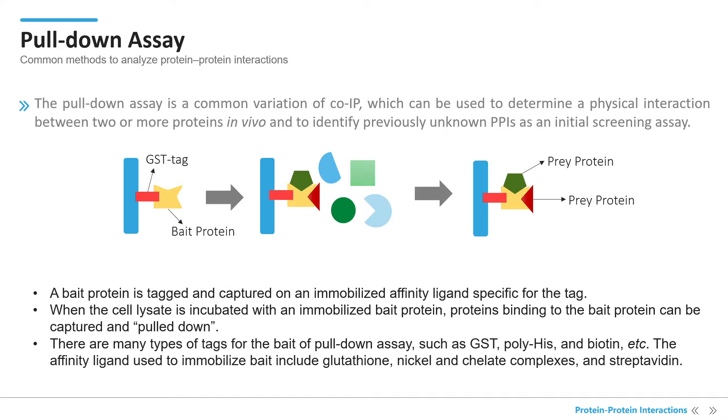The affinity ligands used to immobilize bait proteins include glutathione, nickel and chelate complexes, and streptavidin.